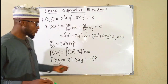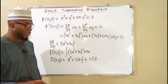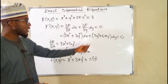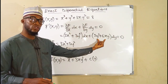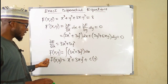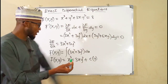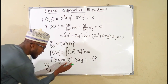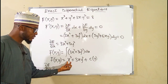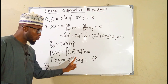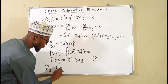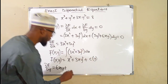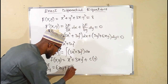Our original function should not contain an unknown c(y), so we need to determine exactly what c(y) is. Since N equals the partial derivative of f with respect to y, we differentiate f(x, y) with respect to y, treating x as constant. Differentiating x cubed gives zero, differentiating 3xy squared gives 6xy, and differentiating c(y) gives c prime of y.